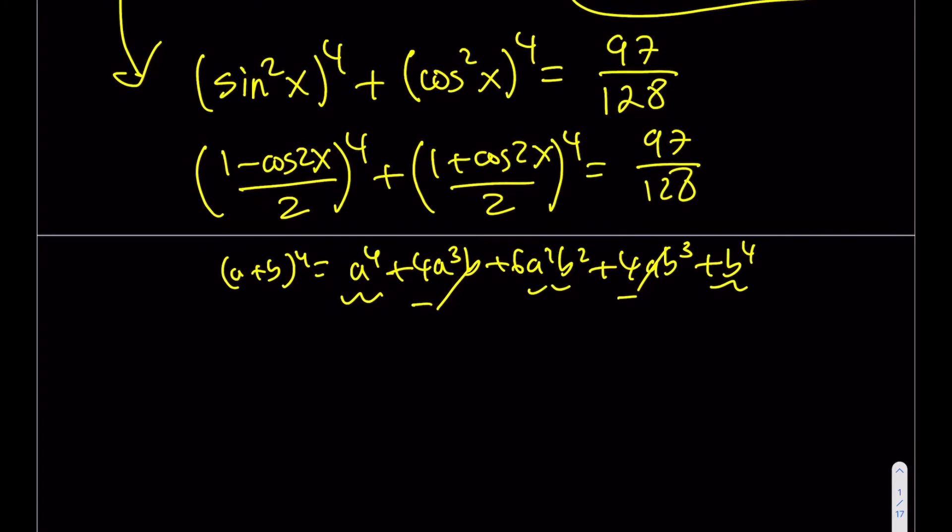So what I'm going to be getting from here is, basically, a is 1 and b is cosine of 2x, by the way. So you're going to be getting a to the fourth, which is 1, plus 6a squared b squared, which is going to be 6 times cosine squared 2x, and then cosine 2x to the fourth power. But you'll get this twice because they're repeated. And this expression is equal to 97 over 128.